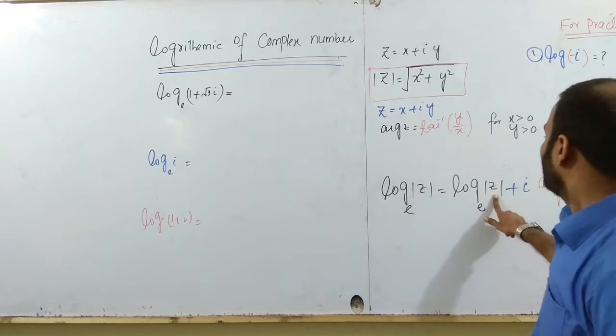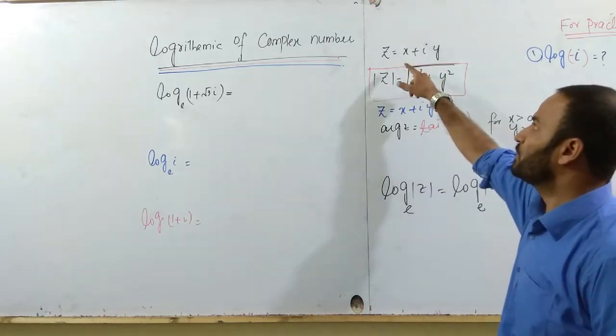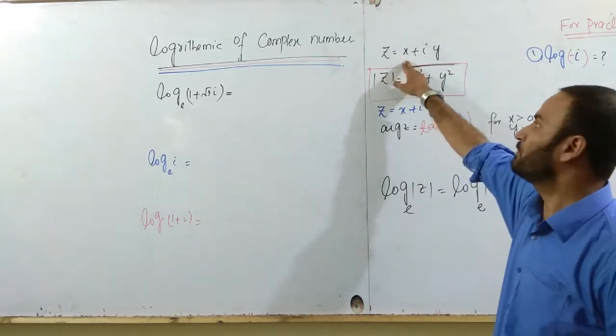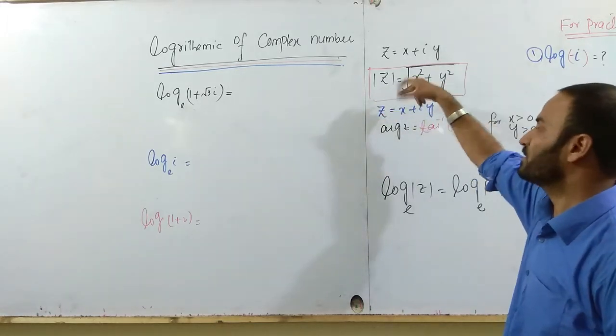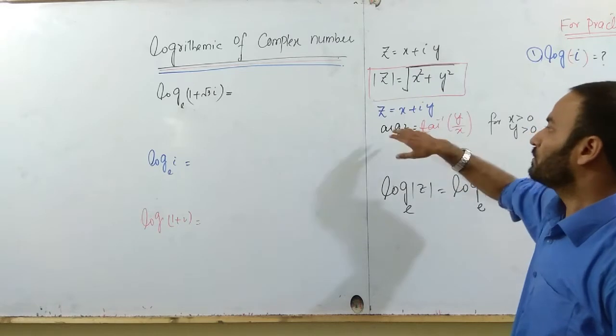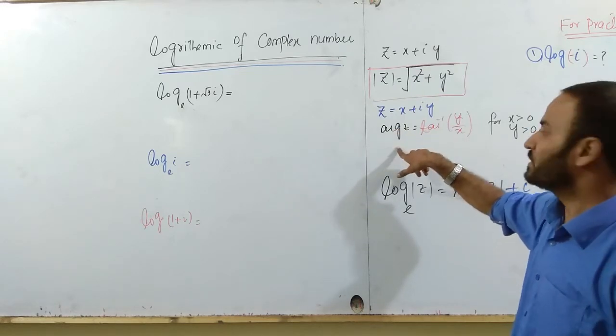I have written here the definition of the magnitude. If any complex number is given to you, the magnitude of the complex number will be real part squared plus imaginary part squared, and take the square root of this quantity. On the other hand, what is the definition of argument of z?